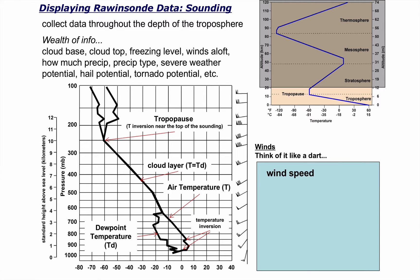Think about a wind barb like a dart. Darts have pointy ends and ends with feathers or guides — when you throw the dart, you throw the pointy end. The tick marks on the other end tell us wind speed. A half tick mark is worth 5 knots; a full long tick is 10 knots. Put a half and a full together, you've got 15. Two long ticks and one half tick is a 25-knot wind.